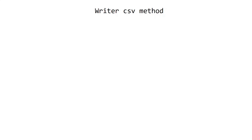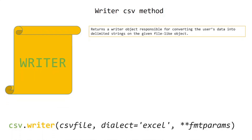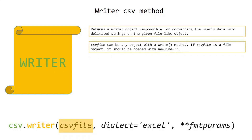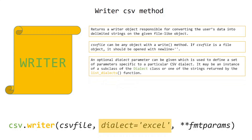The csv.writer() method returns a writer object responsible for converting the user's data into delimited strings on the given file-like object. A CSV file can be any object with a write method. If the CSV file is a file object, it should be opened with newline equals empty string. An optional dialect parameter can be given to define a set of parameters specific to a particular CSV dialect.